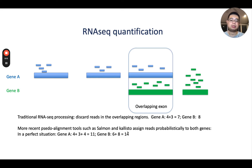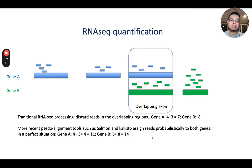However, as I mentioned, Salmon or Kallisto can assign those ambiguous reads probabilistically to both genes. So ideally for gene A it would be four plus three plus three plus four, and for gene B it would be six plus eight equals fourteen. Because those tools take into account the gene expression of other exons — for example, if one exon has zero counts, theoretically all those overlapping reads should be assigned to the other gene. If there are no reads mapped to that exon, it means that gene is more likely silenced, so those reads should be from the other gene.